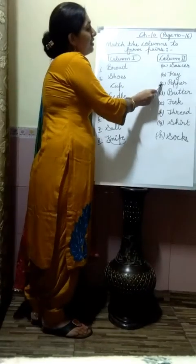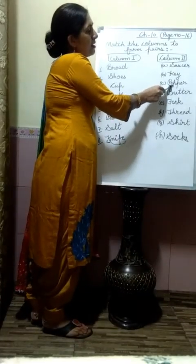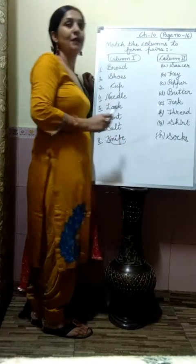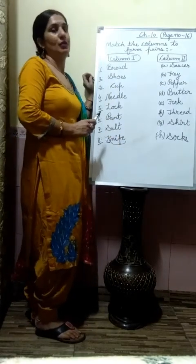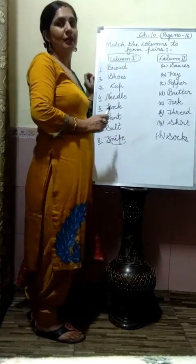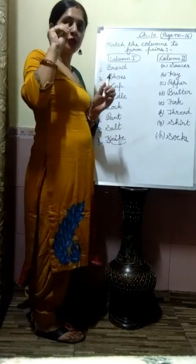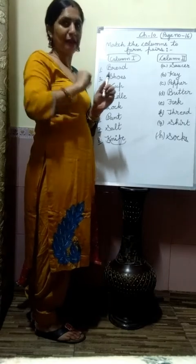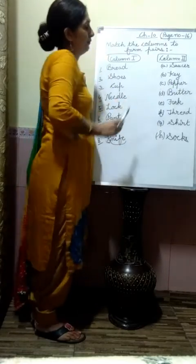Third is pepper — P-E-P-P-E-R — pepper. Pepper means kaali mirch. It is small and round, black in color. That is pepper.